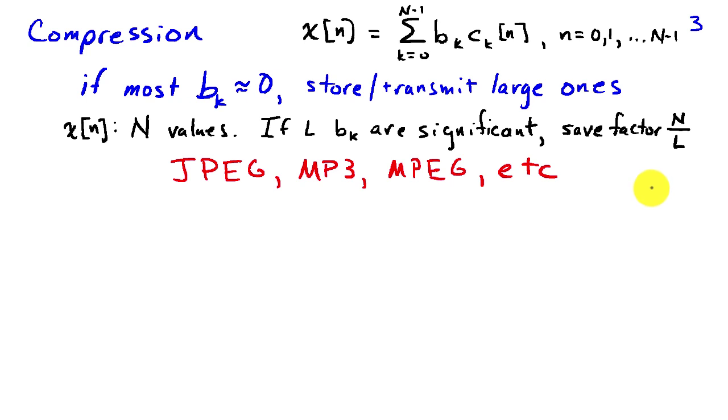This is the basic idea that's used in jpeg, mp3, mpeg, and so on. It's to represent the signal in terms of a set of basis signals where there's a significant number of coefficients that are small. And we save the significant coefficients and reconstruct our signal from those coefficients.